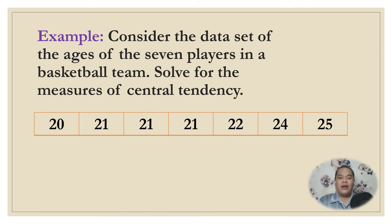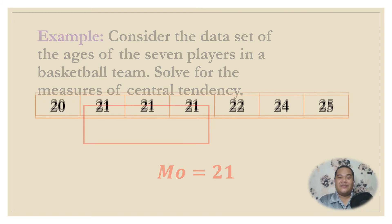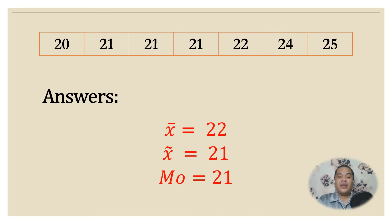Looking back at the example of the 7 basketball players and their ages, it is easy to identify the mode as 21. So for this data set, the mean is 22, the median is 21, and the mode is 21.